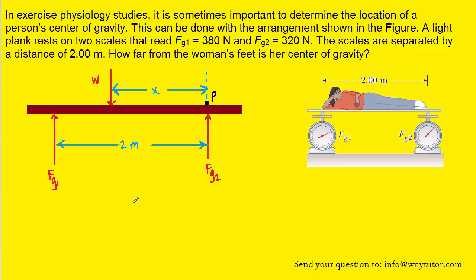Now, there turns out to be three forces acting on the plank. Perhaps the most obvious force is the weight of the woman that is pushing downward on the plank. So we've labeled that W and have directed that force down.